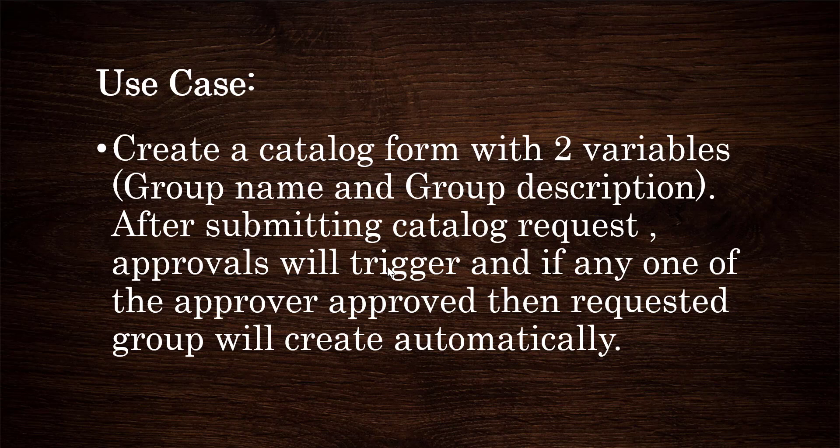We need to create one catalog form with two variables: group name and group description. Based on the values entered in these two variables, one group will be created if any one approver approves. Let's go to the instance and try to implement it.